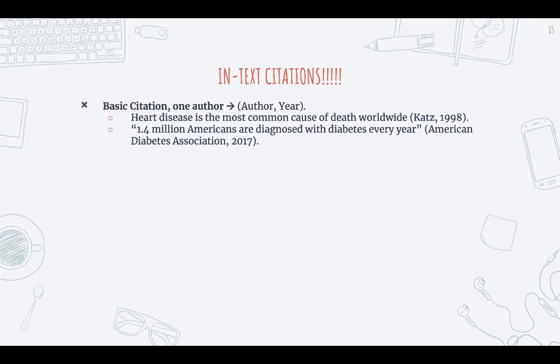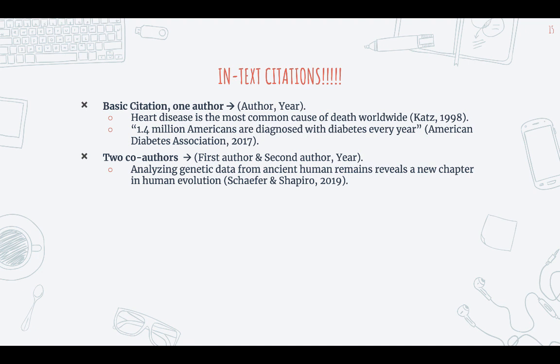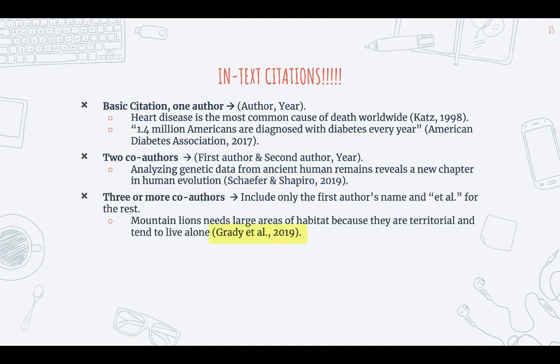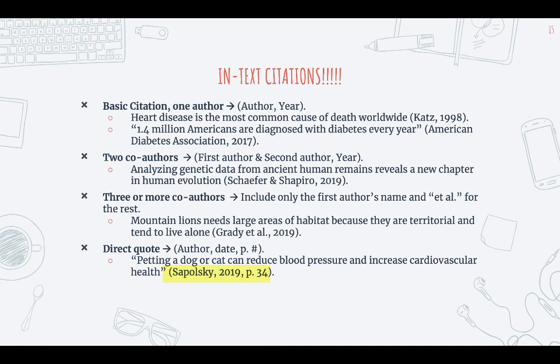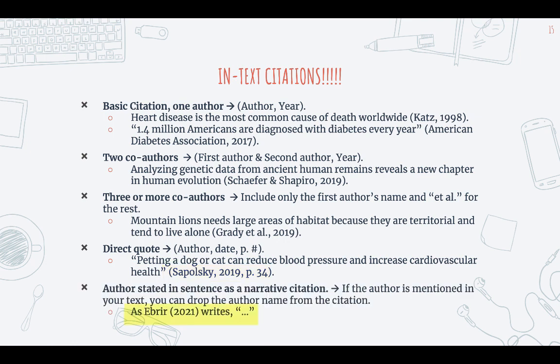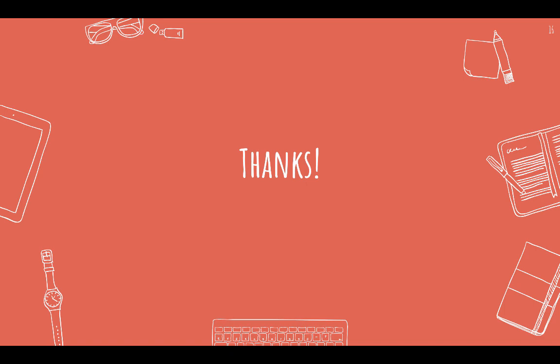Let's look at some in-text citations. First, you have your basic citation with one author — you just put the author and the year in parentheses. Here we have an example with a person as an author, and then another example with an organization as an author. Next, you have two co-authors: you include the first author and the second author, then the year. If you have three or more co-authors, include only the first author's name and et al. for the rest. If you have a direct quote and you have a page number, be sure to include the author, the date, and the page number. If the author is mentioned in your text, you can drop the author's name from the citation — for example: as Ebrey (year) writes, and then the quotation. So those are some of the basics of APA citation style.